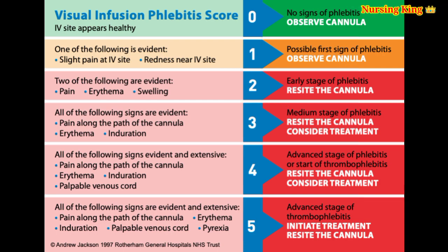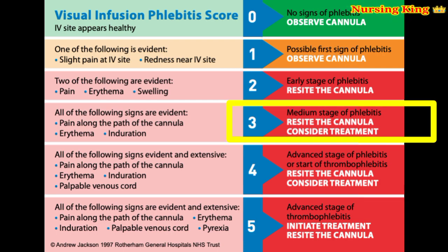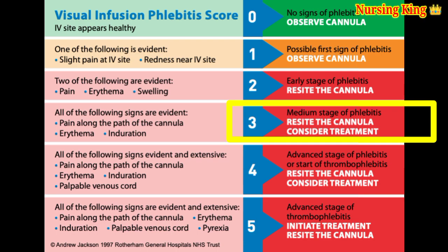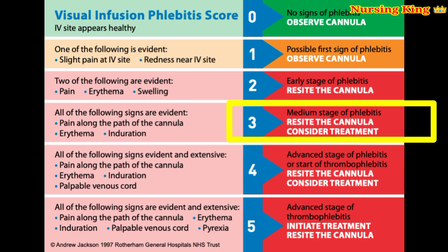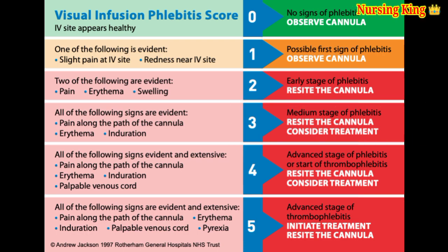Score 3 is the medium stage of phlebitis. In this stage, there is pain along the side of cannulation, erythema, irritation, and redness are present.